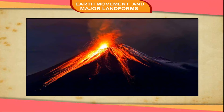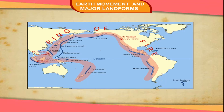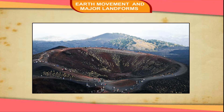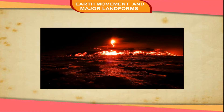Kinds of Volcanoes. According to the nature and frequency of eruptions, volcanoes have been divided into three categories: Active Volcanoes, Dormant Volcanoes, and Extinct Volcanoes. Active volcanoes erupt frequently. There are more than 500 active volcanoes in the world. Most of them are found in a circular belt around the Pacific Ocean, called the Ring of Fire.